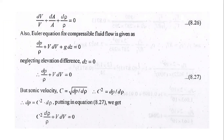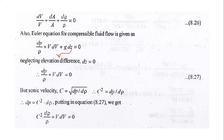We know that for sonic velocity, c = √(dp/dρ), so c² = dp/dρ. Therefore, dp = c²·dρ. We substitute this relationship into Euler's equation to get: c²·dρ/ρ + V·dV = 0.